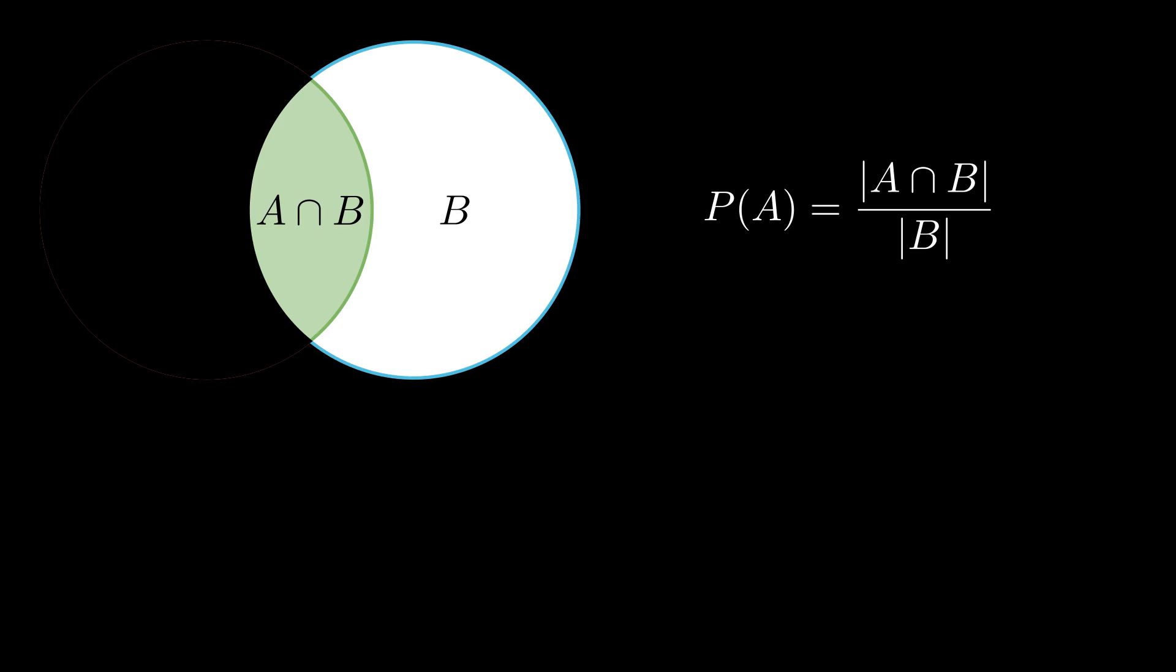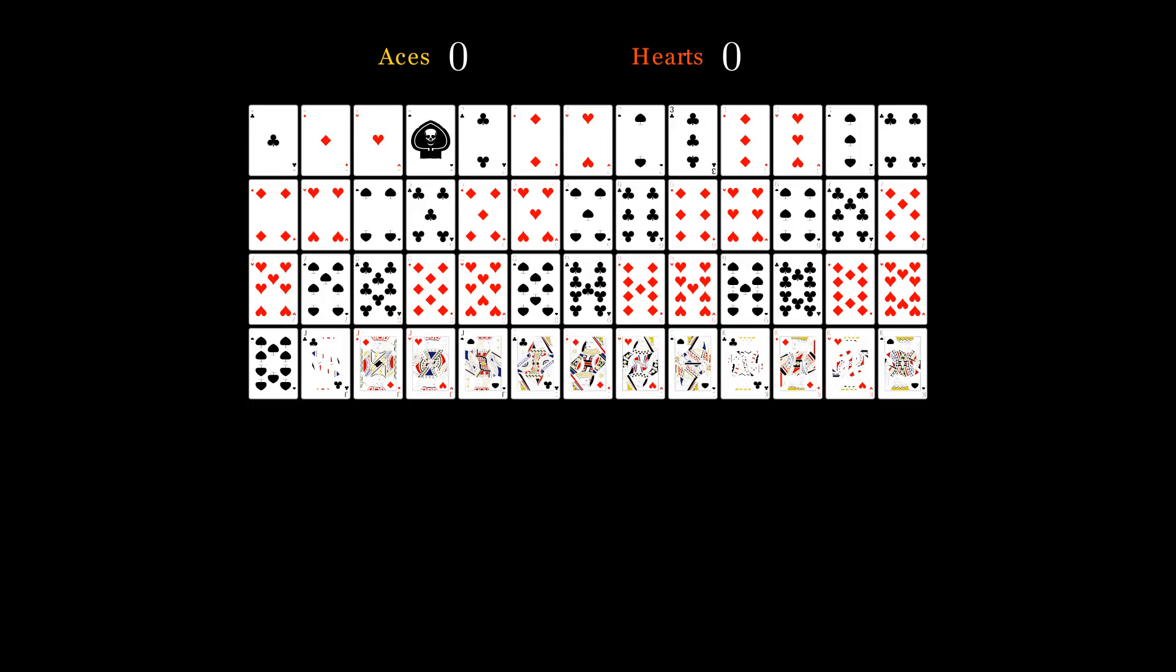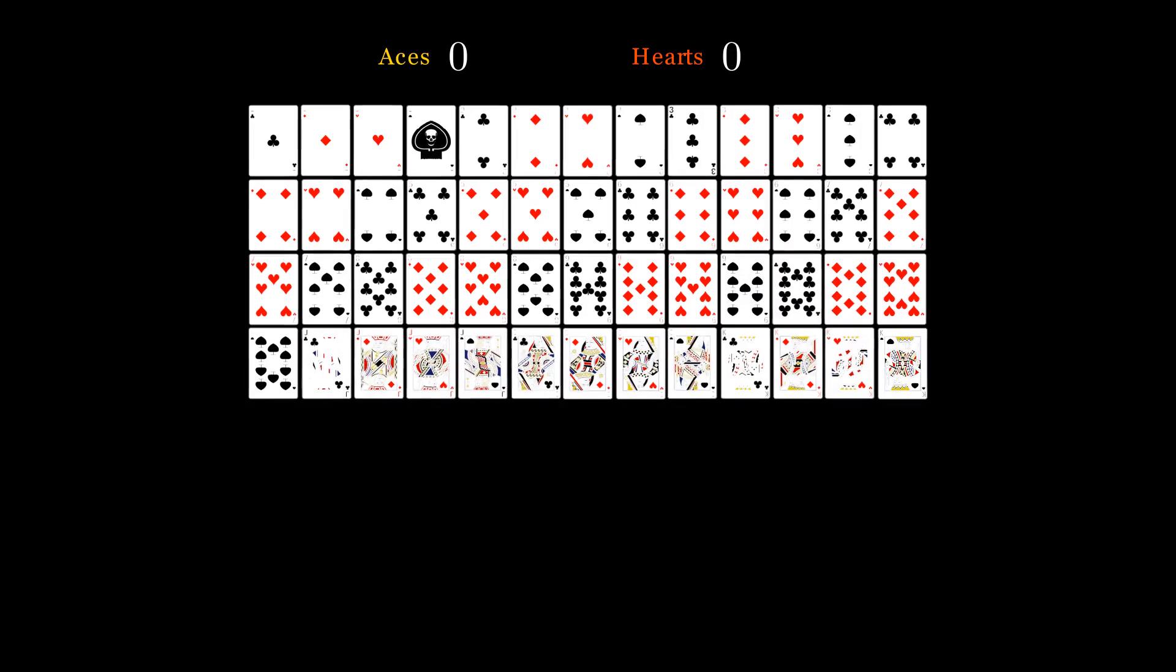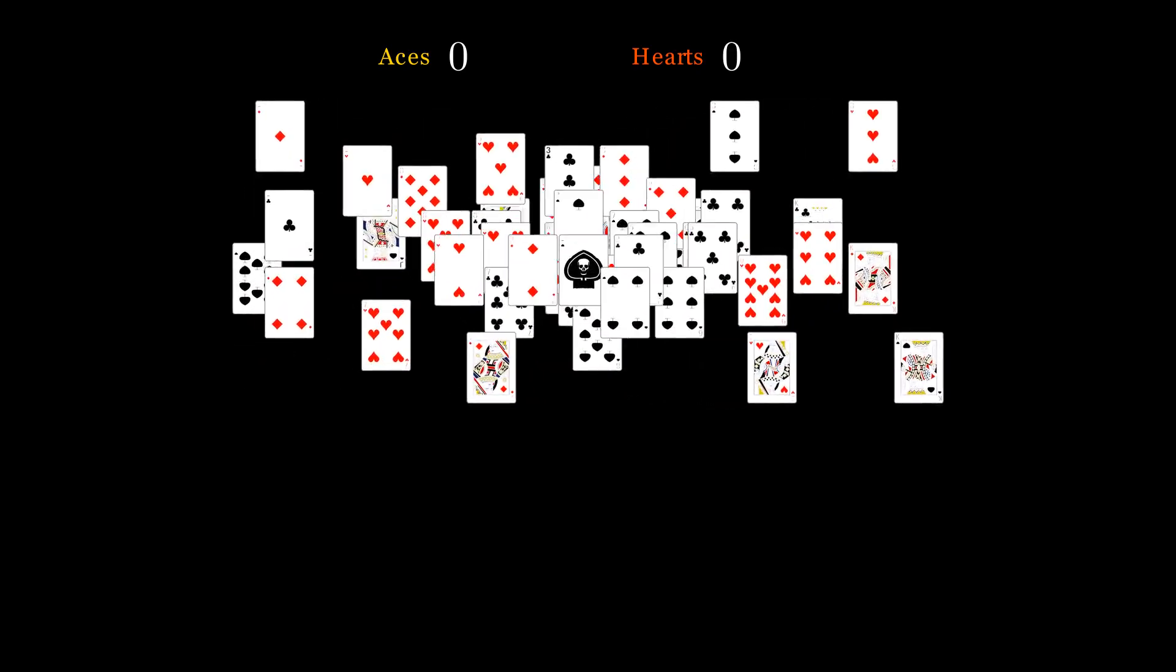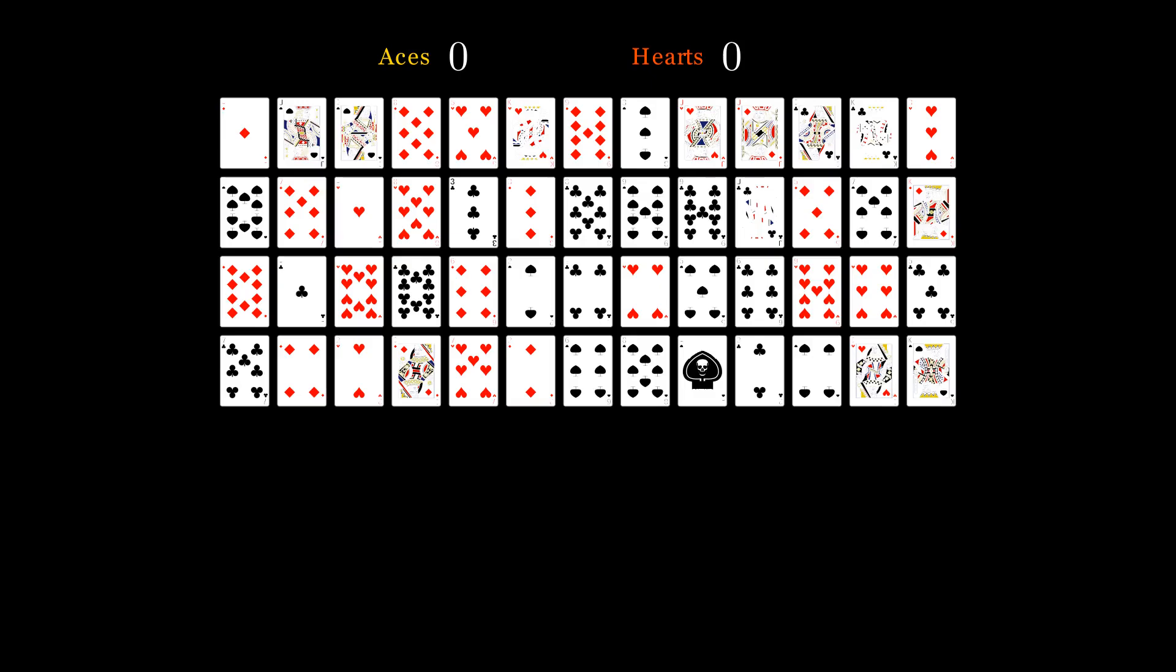Let's further solidify our intuition by looking at an example. Suppose we have a deck of 52 playing cards and we are interested in finding the probability of drawing an ace from the deck of cards given that a heart has already been drawn. We shuffle the deck so that the cards are in random order so that every card has an equal chance of being drawn.